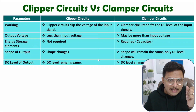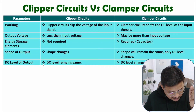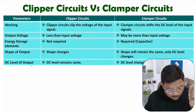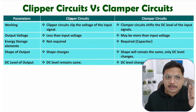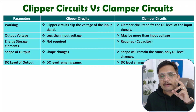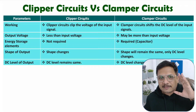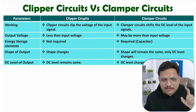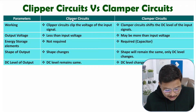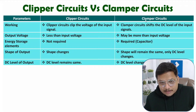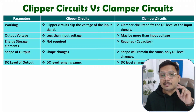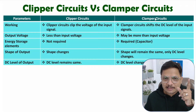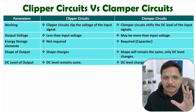The next parameter is the DC level of output. With a clipper circuit, the DC level will remain the same — DC level will not change. With a clamper circuit, the DC level will change and the shape will remain the same. That is how things are.